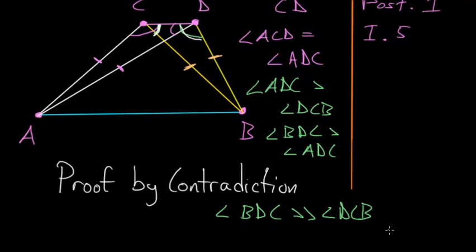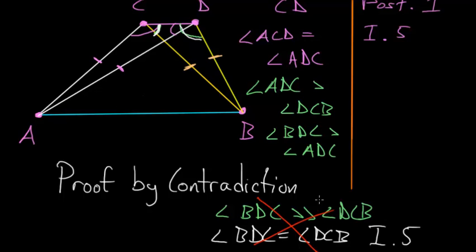What we've just concluded from Book 1, Proposition 5 is that angle BDC must equal angle DCB. But we just showed that BDC has to be much bigger than DCB. Obviously, both of these things can't come true at the same time, and we can conclude from this that we have a logical contradiction.